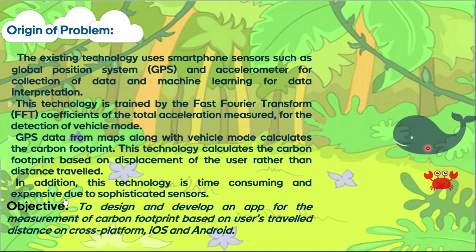We also have an info activity which shows some info about the app and the developer. Now, the origin of the problem with existing apps: there are a few apps which do the same, but they use normal sensors such as GPS and accelerometer for data collection and machine learning for data interpretation. This technology is trained by the fast Fourier transform (FFT) coefficients of total acceleration measured for detection of the vehicle mode. This takes time and is not very accurate. It also requires high phone requirements for sensor and machine learning processing.